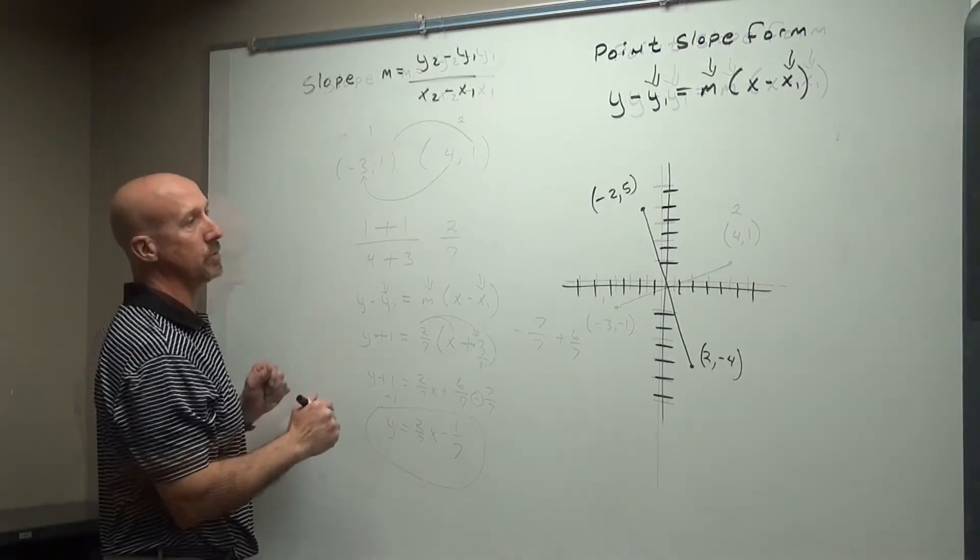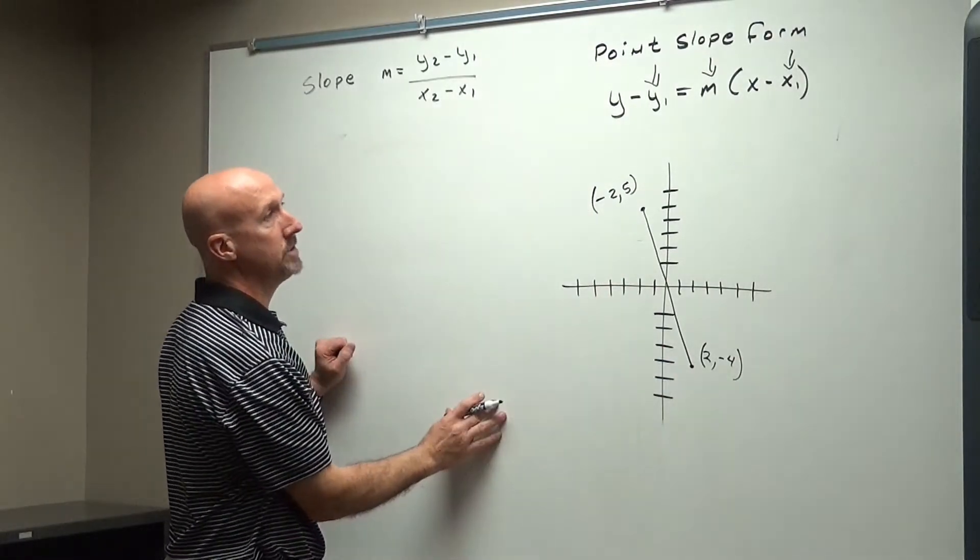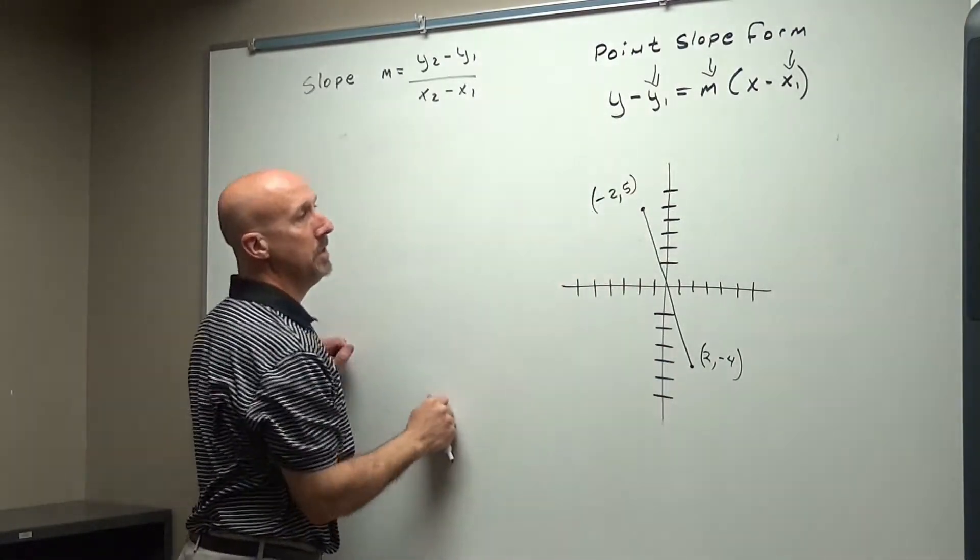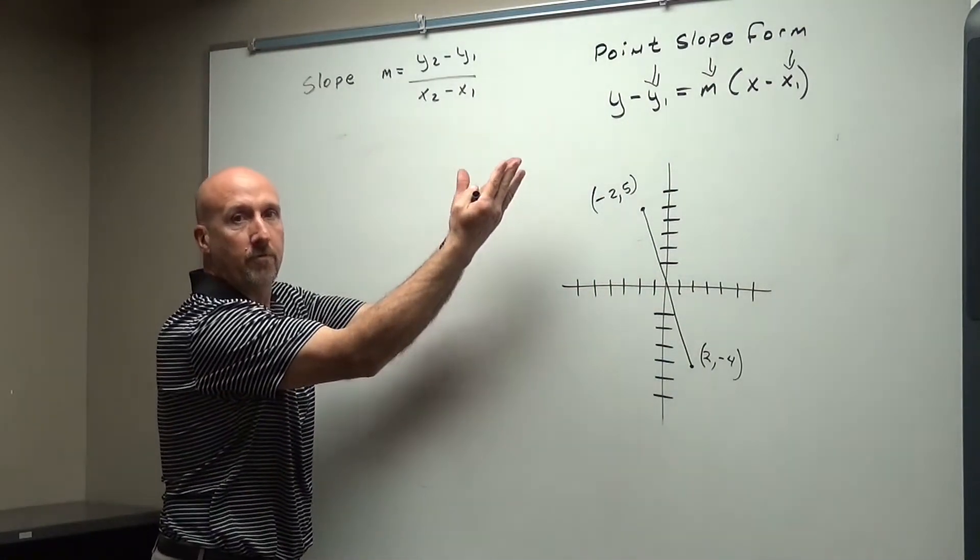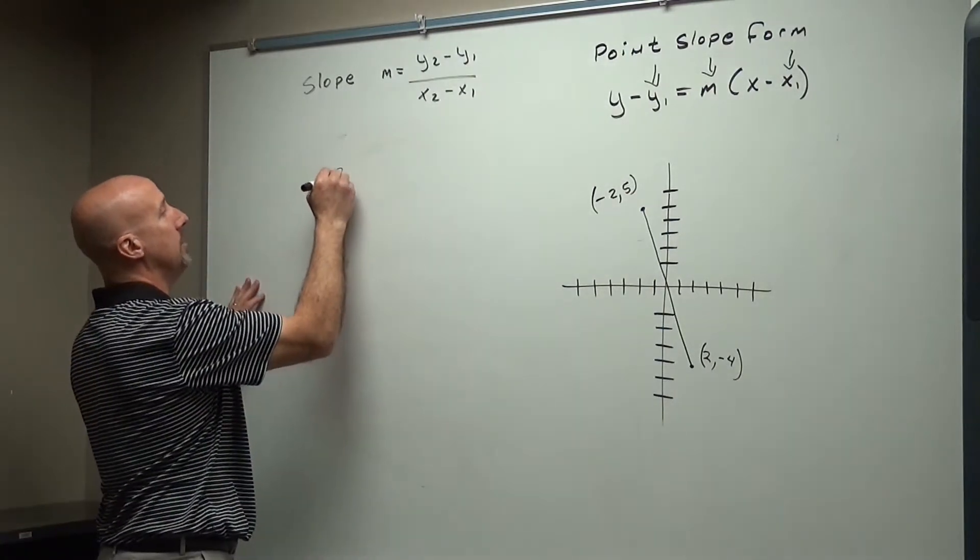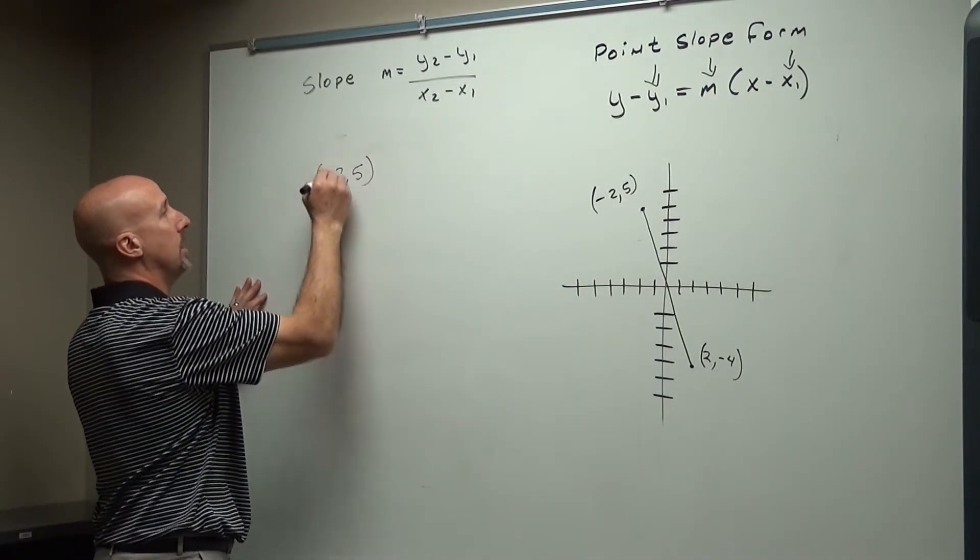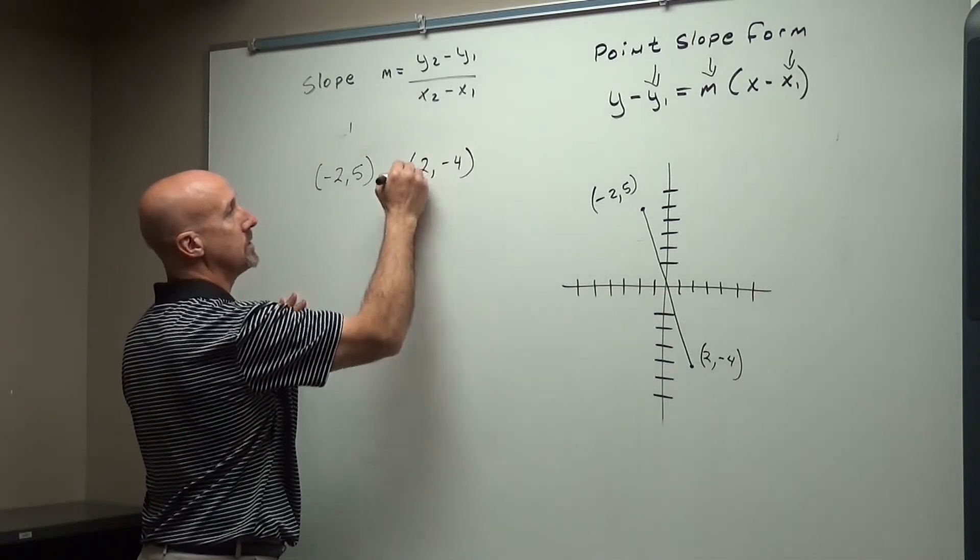Alright, so here we go with this one here. So I'm going to find the slope given these two points, and use that for my M. And then I'm going to plug in one of these coordinates for my x1, y1. So I put in point-slope form, then change it to slope-intercept form. So I've got my two coordinates. I'm going to say that's my first coordinate. And this is my second coordinate.